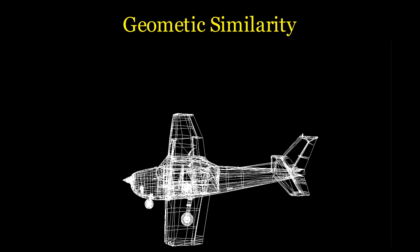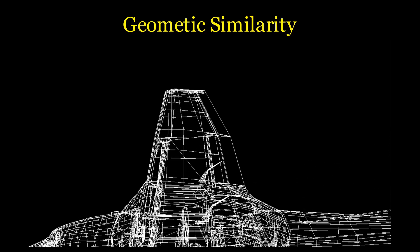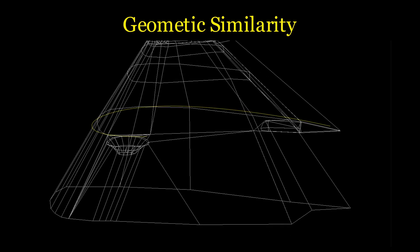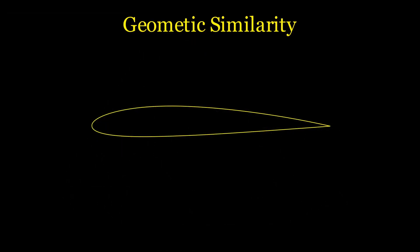Starting with the geometric similarity, it's kind of self-explanatory. But, for an example, let's take a segment from this NACA 2412 wing, which is what the Cessna 172 has.